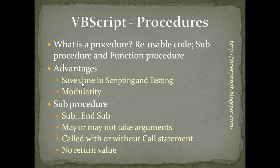Let us first see what is a sub-procedure. A sub-procedure in VBScript starts with the Sub statement followed by the name of the procedure and ends with the End Sub statement. A sub-procedure may or may not take arguments. Arguments are the additional information you give when you call the procedure. The sub-procedure can be called with or without using the call statement. The main thing about the sub-procedure is that it does not provide any return value — it is more or less self-contained, so everything that needs to happen happens within the sub-procedure.